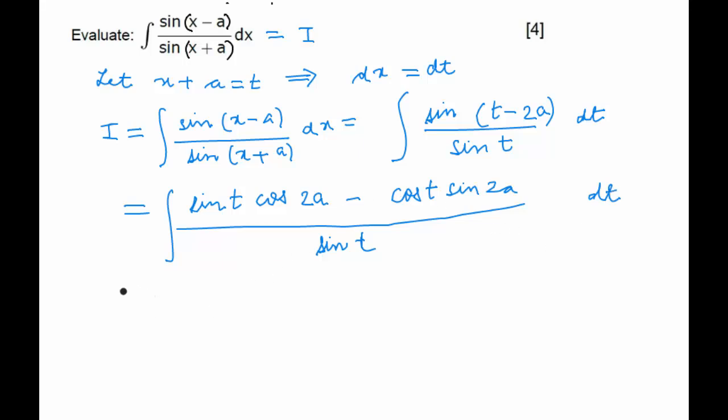Now we separate. We get integration of cos of 2a dt minus integration of sin of 2a into cot of t dt.